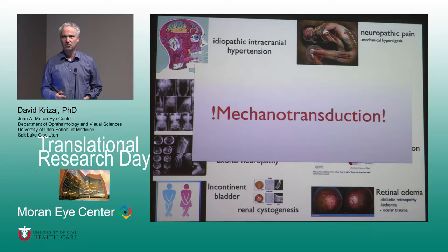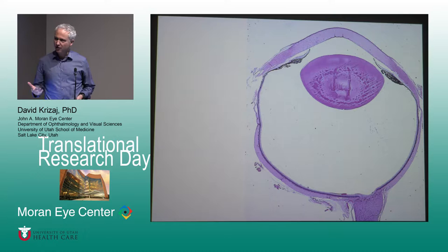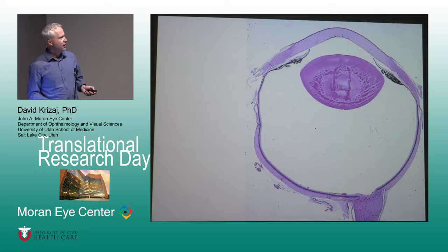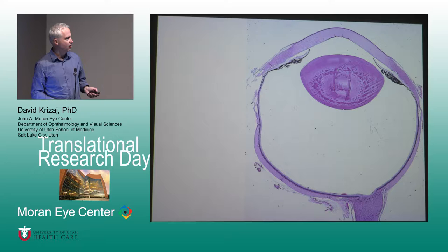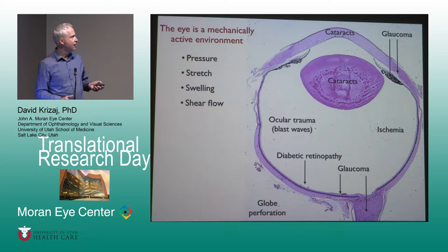Pretty much every cell in our body really cares about mechanical forces. If we look at the eye, it is a highly mechanically active environment. Just rubbing our eye, blinking, or getting up from bed increases our intraocular pressure to hundreds of millimeters. There is swelling going on, activity-dependent swelling, there is pushing, there is stretching, there is the effect of hydrostatic pressure. What I would like to leave you with is this idea of the eye being a highly mechanically active environment.